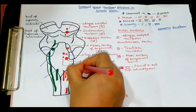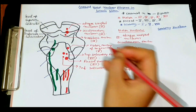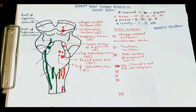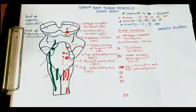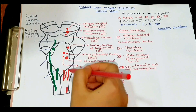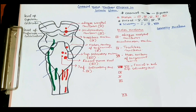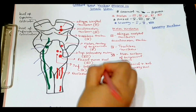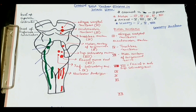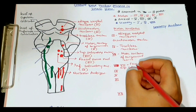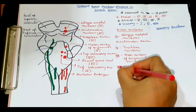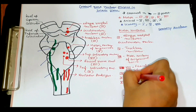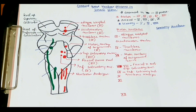There is another nucleus at the lower pons called the inferior salivatory nucleus, which is the motor nucleus of cranial nerve nine. There is also another nucleus called nucleus ambiguus, which is also a motor nucleus of cranial nerve nine. So cranial nerve nine has two motor nuclei: the inferior salivatory nucleus and nucleus ambiguus.